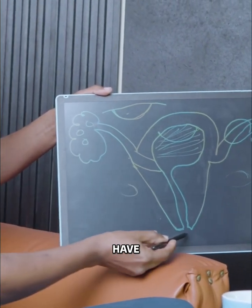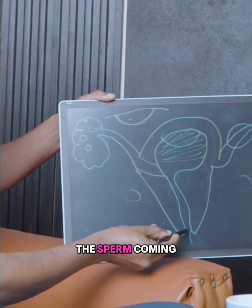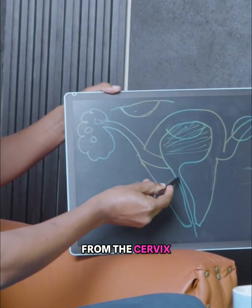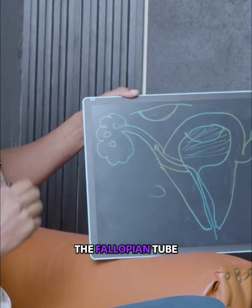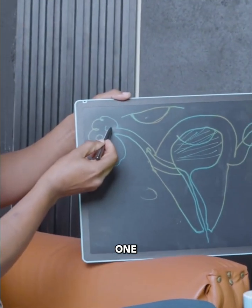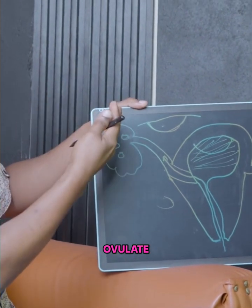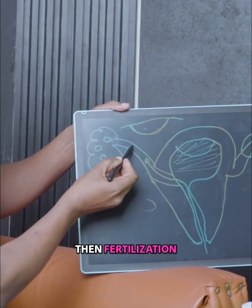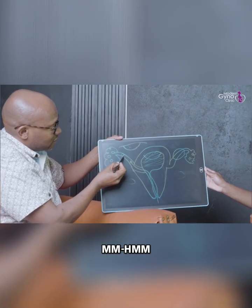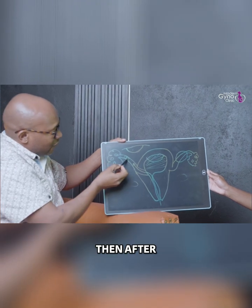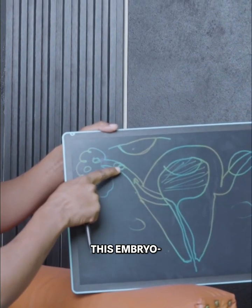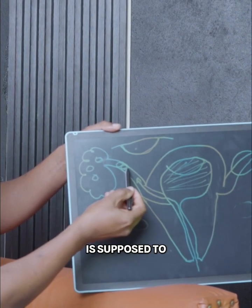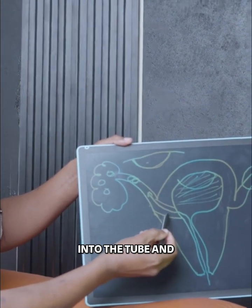So you'll always have the sperm coming from the cervix, transported all the way into the fallopian tube. Then one of the eggs will ovulate. Fertilization will occur here, and after fertilization, this embryo is supposed to come down into the tube.